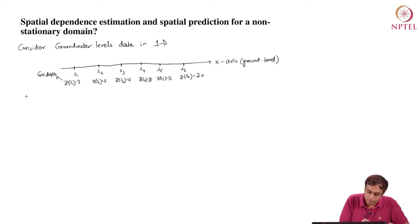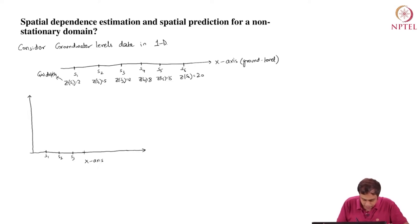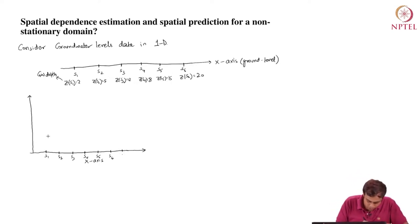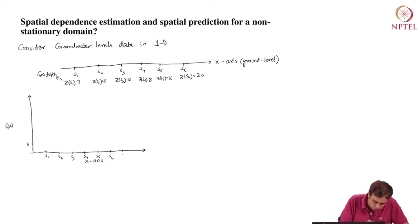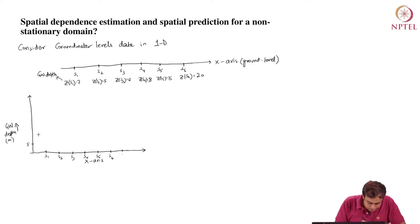We're going to draw these data on a graph. I have groundwater depth on the y-axis and locations on the x-axis — S1 through S6 — with levels marked at 5, 10, 15, 20, and 25 meters on the y-axis. At S1, the observed value is 2; at S2, it is 5. I'll try to mark them to scale.